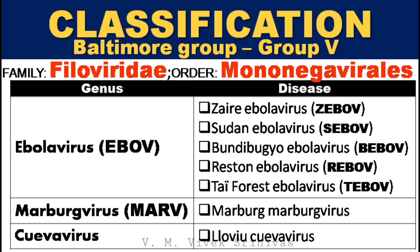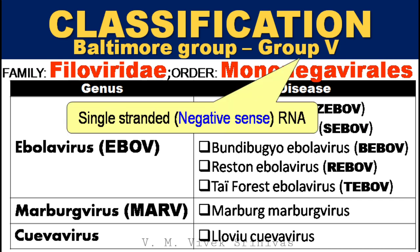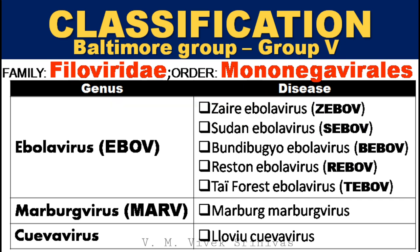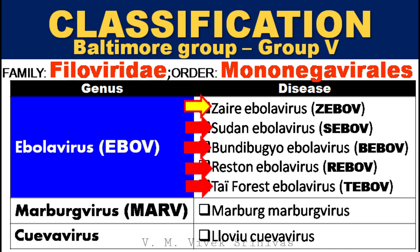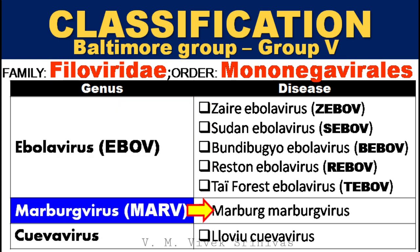Classification: Filoviridae family, classified under Baltimore Group 5, with the order Mononegavirales. The genera under this family include the Zaire Ebola virus and other species such as Sudan, Bundibugyo, Reston, and Tai Forest virus, under the genus Ebolavirus; and the Marburg-Marburg virus under the genus Marburgvirus.